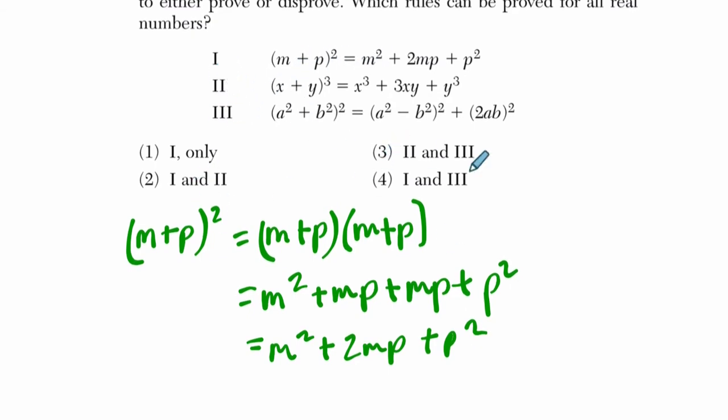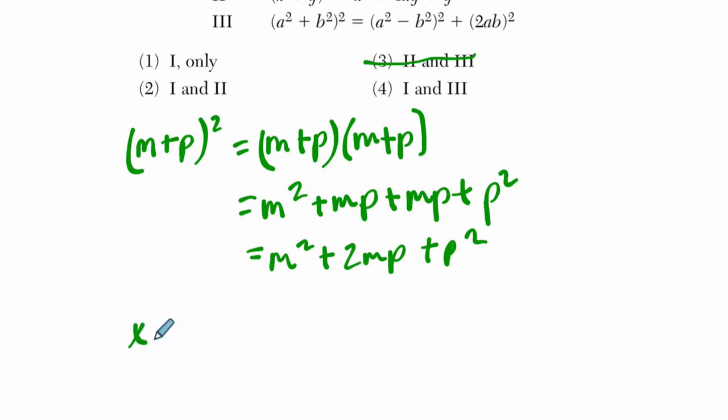So the answer has to have one in it, and I know that three cannot be true then. Alright, one must be a choice. Now in the second one I have (x+y)³. Now this one right here, I'm thinking that, well it's really just (x+y)² times (x+y). Then that result times (x+y).